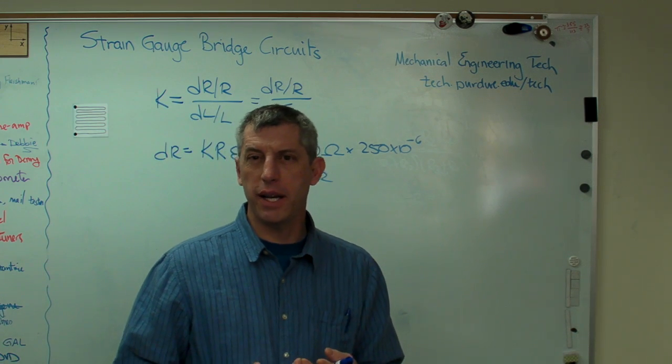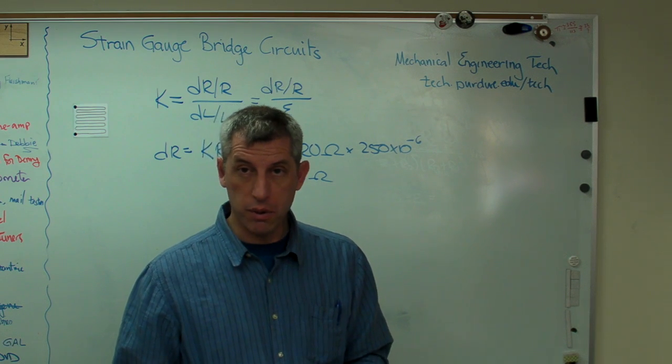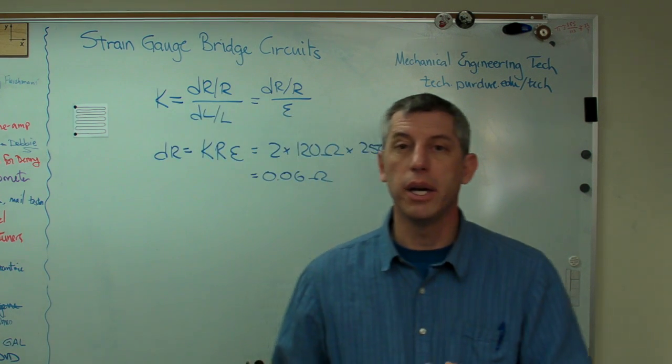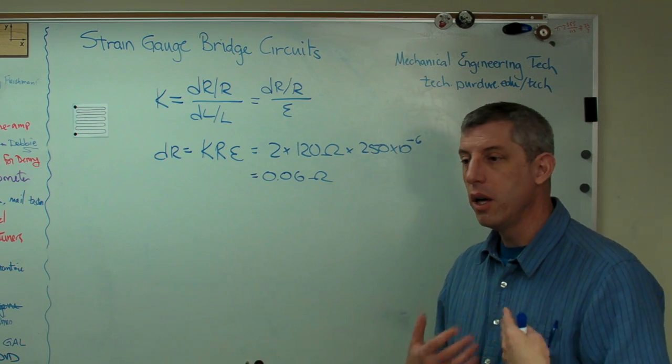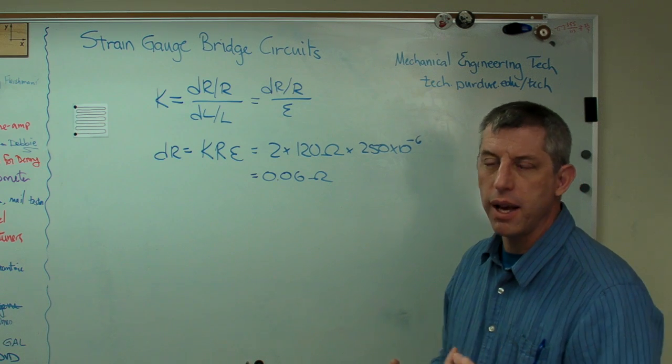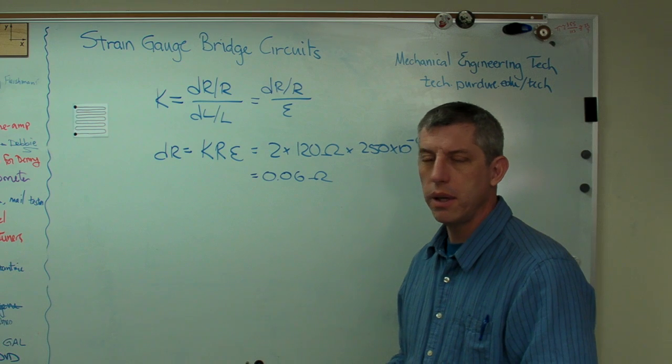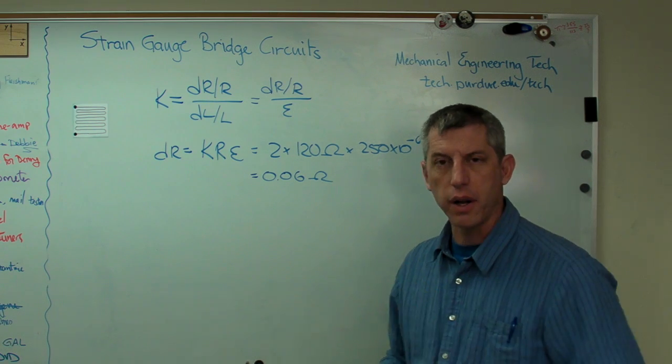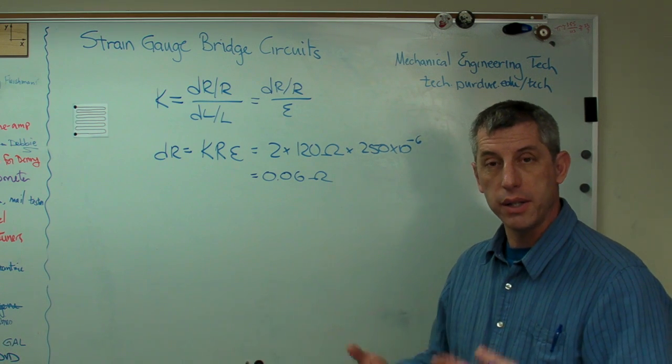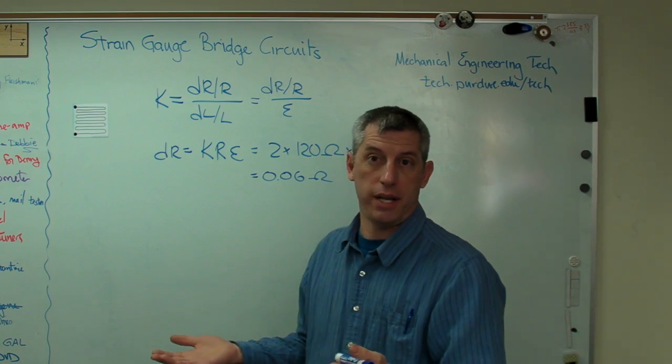If you want an example of a data acquisition system, look at the microphone input on your computer. That's a data acquisition system. You take sound, pressure waves in the air, turn them into a voltage. It goes through that little wire, plugs into that three and a half millimeter plug on the front of your computer. And you can record. It takes something you want to know, pressure waves in the air, and turns it into a voltage. That's what a sensor does.